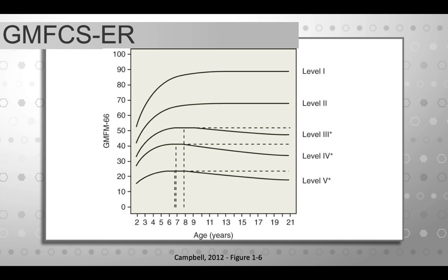Another really critical thing about the GMFCS is that it has been shown to be very stable over time. Children don't tend to change levels — if I'm a level three when I'm five years old, I'm probably going to be a level three when I'm 12 years old. If children change levels, which happens very rarely, they usually change just one level. And if anything, they often go down a level, which is probably less reflective of their actual function and more reflective of the fact that PTs are optimists who may overestimate children early on.